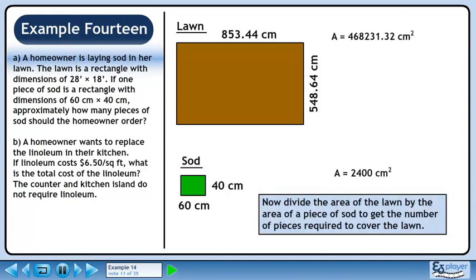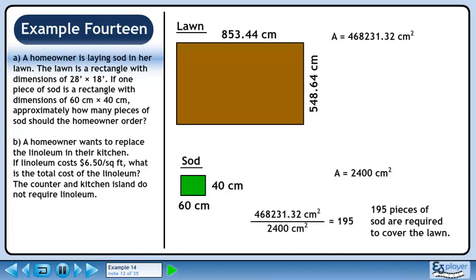Now divide the area of the lawn by the area of a piece of sod to get the number of pieces required to cover the lawn. Dividing the values gives 195. Therefore, 195 pieces of sod are required to cover the lawn.